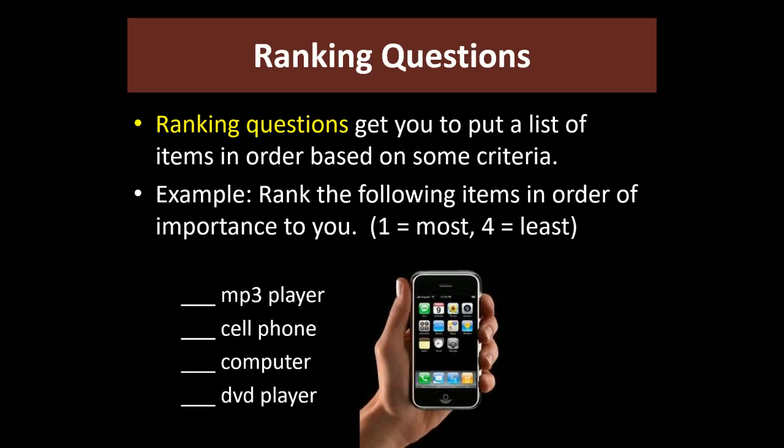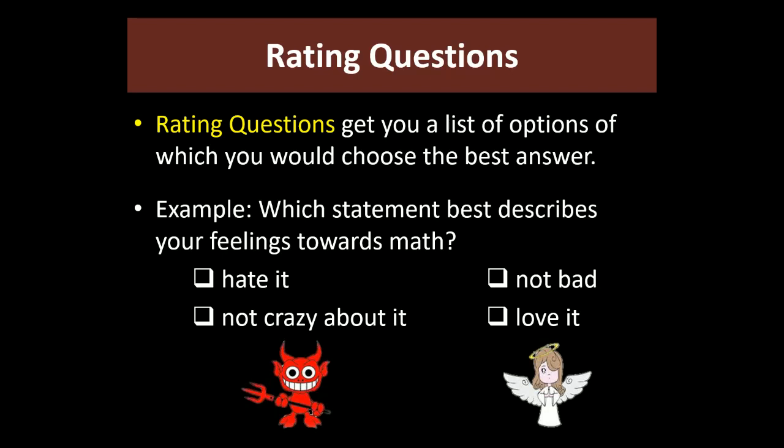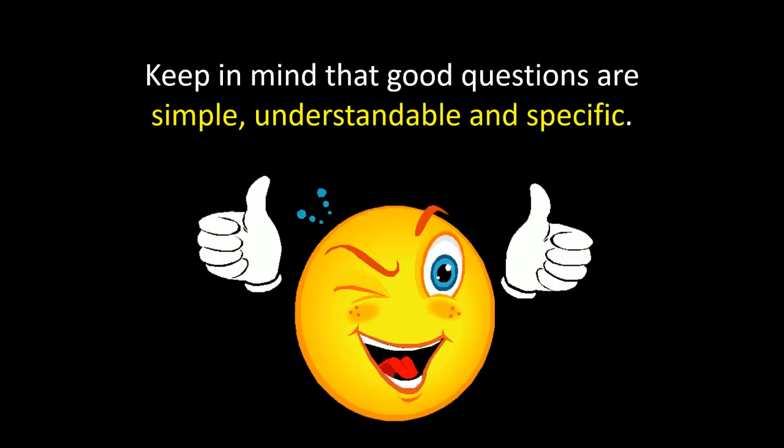Ranking questions ask you to order items from most to least important — for example, ranking a cell phone, computer, mp3 player, or DVD player. Most of you would probably put cell phone first. Rating questions are different from ranking: the most common form is a scale of one to ten, like 'How much do you love math — are you a three, a five, or an eight?' A simplified version might just ask you to choose: love it, hate it, it's not bad, not crazy about it, and so on.